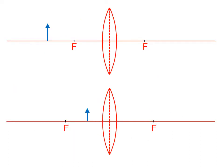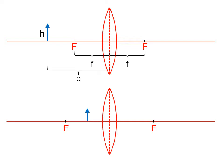We're going to use a ray diagram to locate the image for this object, indicated by the blue arrow. We have a focal point on each side of the lens, and here in the top picture we have a converging lens. The height of the object indicates its height above the principal axis. There's the focal length f, which for a converging lens would be a positive number. There's the object distance p, and we want to find the image distance.